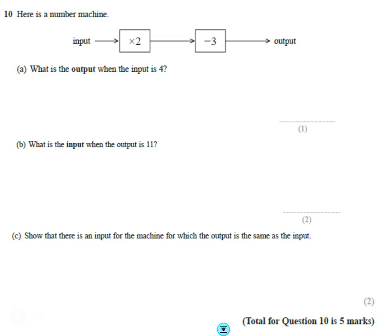Right, question number 10. We've just got a number machine, so it's a really common type of question. So what have we got? Here's the number machine. We put the input in, we times it by 2, then we subtract 3, and then we get the output.